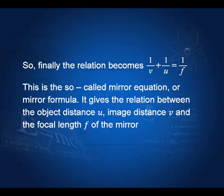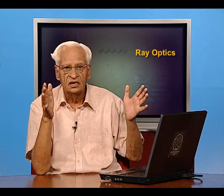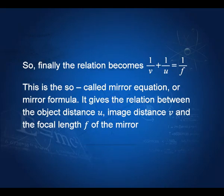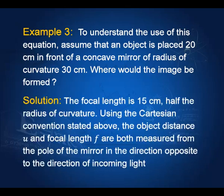This is called the mirror equation or mirror formula. It connects the object distance u, image distance v, and the focal length of the mirror. When we apply this formula, we must take account of the signs of v, u, and f. Let us clarify this with an example. Assume that an object is placed 20 centimeters in front of a concave mirror of radius of curvature 30 centimeters. Where would the image be formed? Since the radius of curvature is 30 centimeters, the focal length is 15 centimeters — half the radius of curvature. Using the Cartesian convention, u is negative and f is also negative.